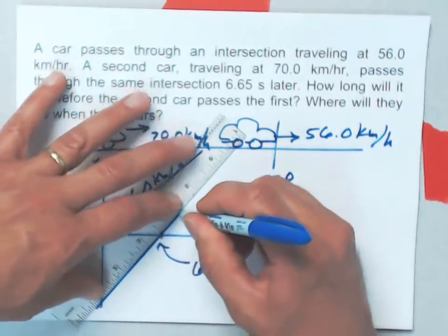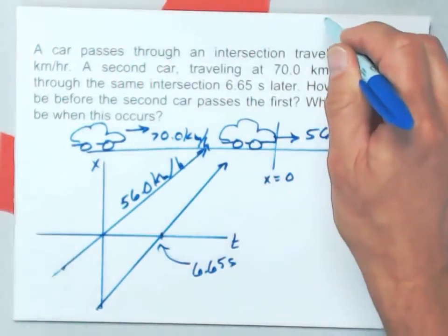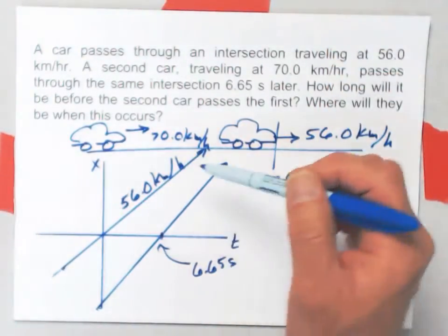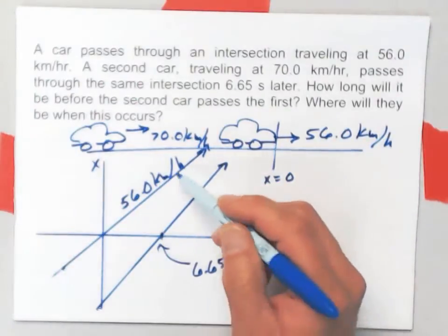But somewhere up there in the clouds, well, higher on the x-t graph than I can draw here, is where these two lines are going to cross.